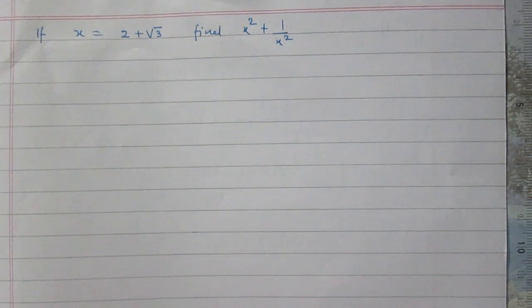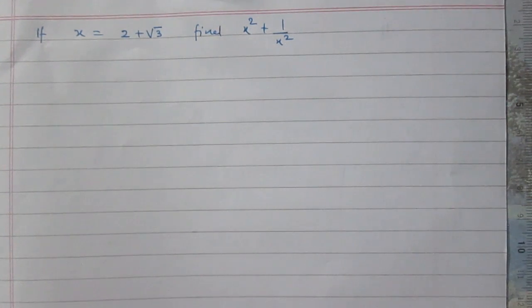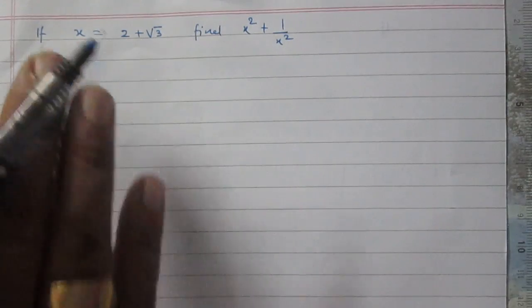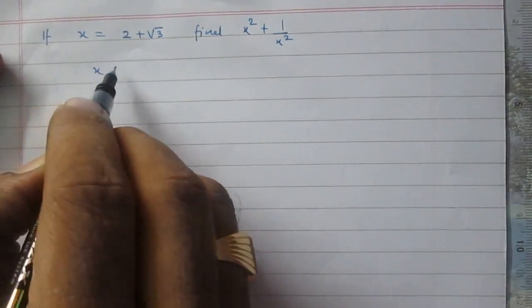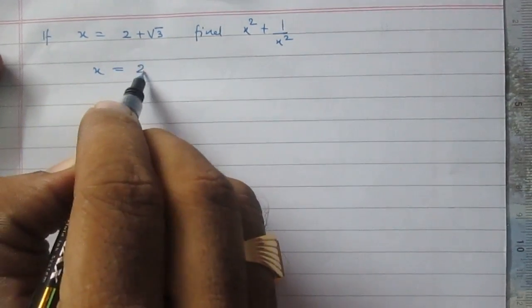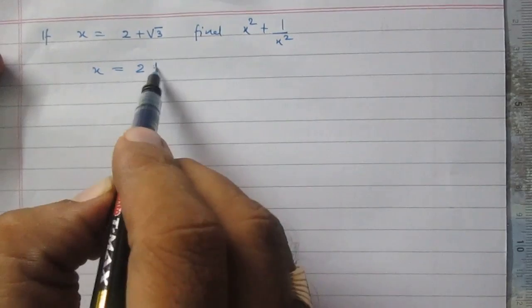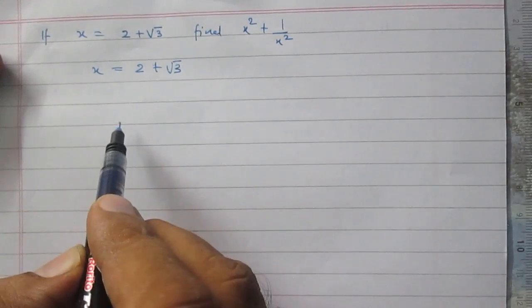If x is equal to 2 plus square root 3, then find x square plus 1 by x square. We are given that x is equal to 2 plus square root 3.